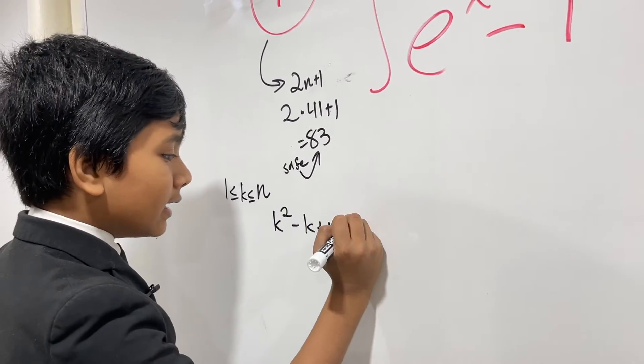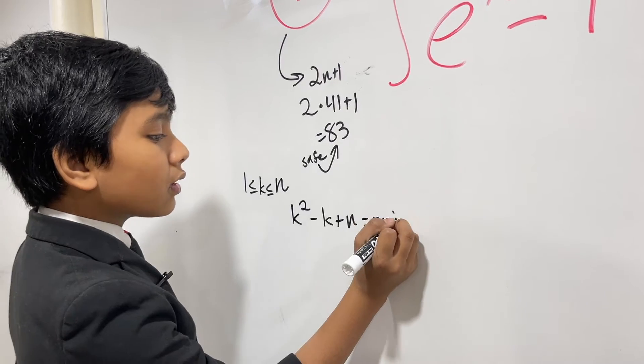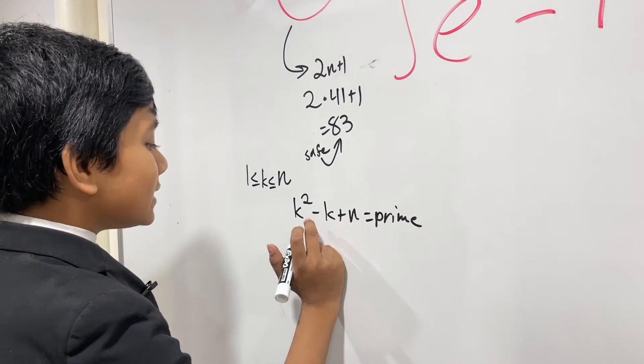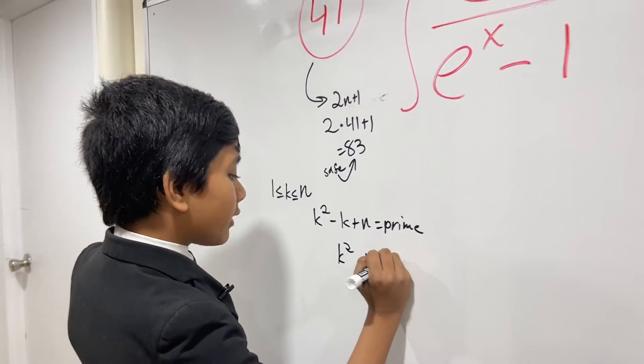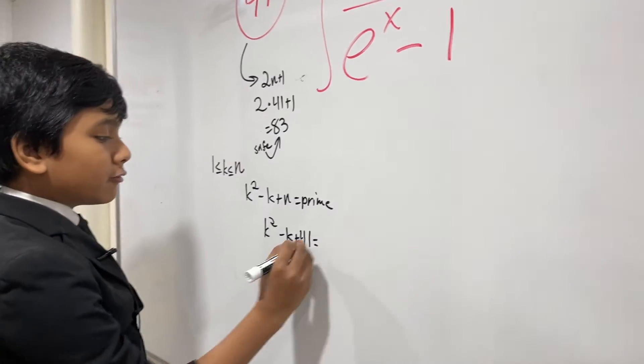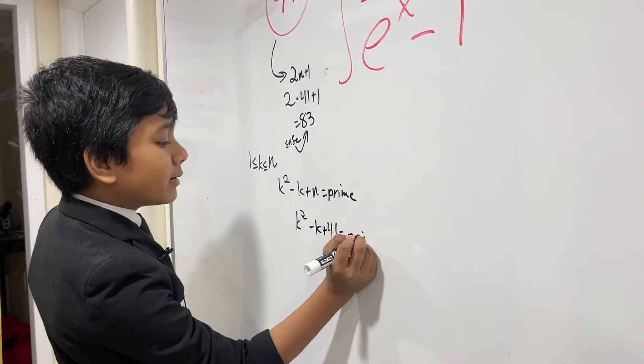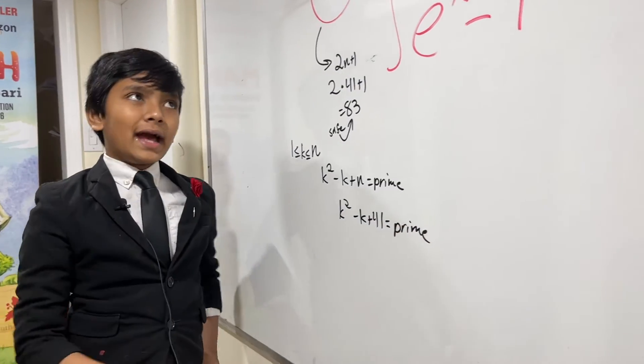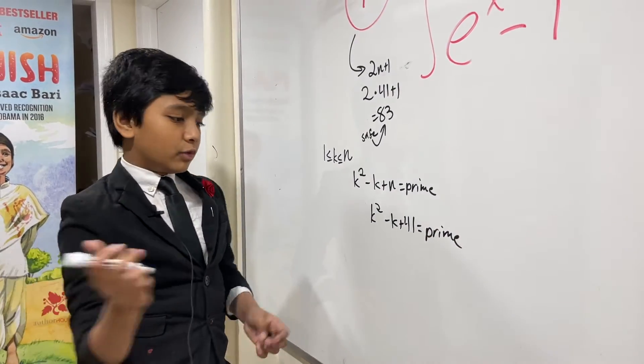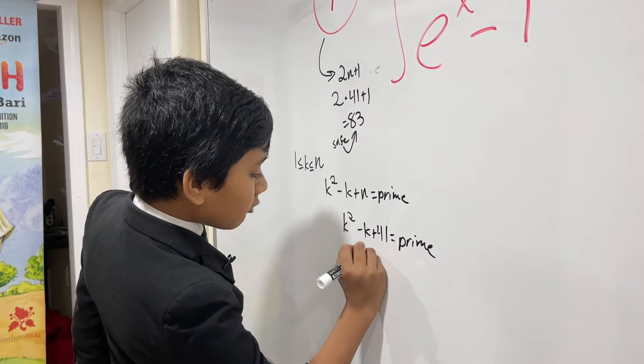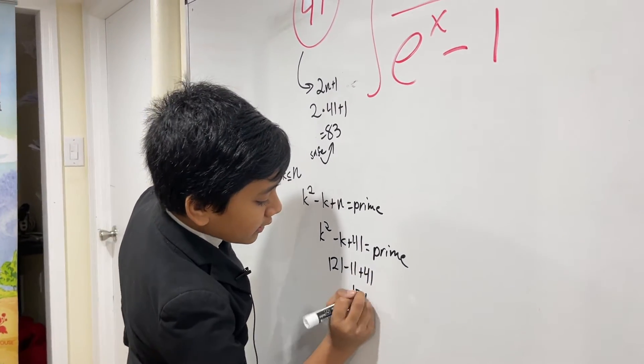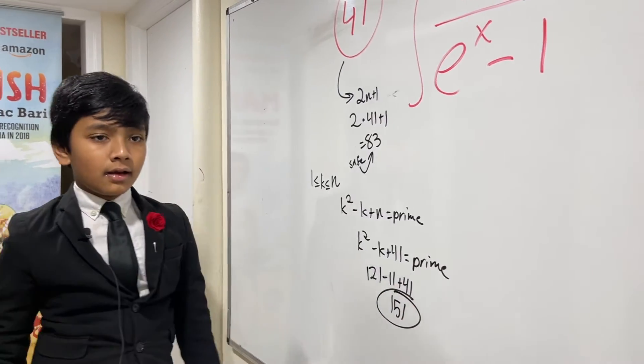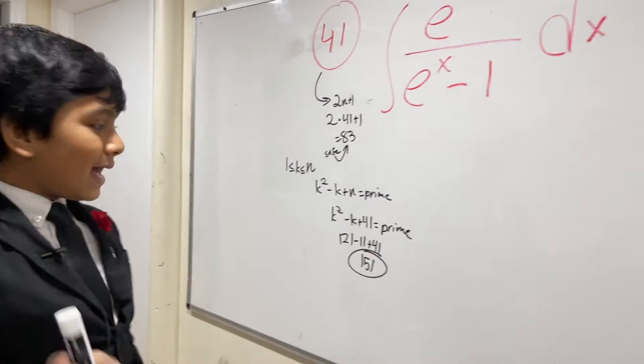For any value k yields a prime number. And yes, in this case k squared minus k plus 41 for any number between 1 and 41 gives you a prime number. Let me pull something out of my hat as an example. 11 for example: 121 minus 11 plus 41 equals 151, which is prime.